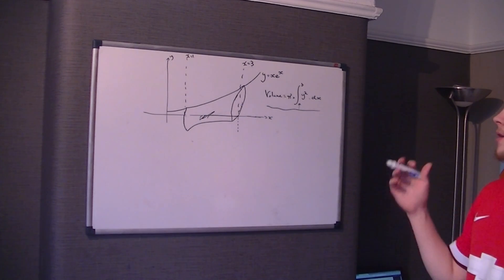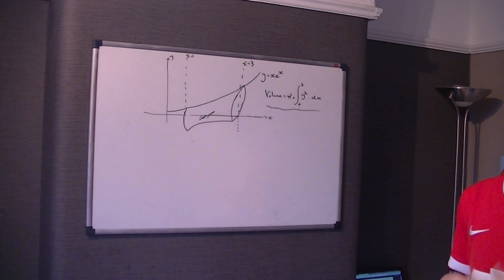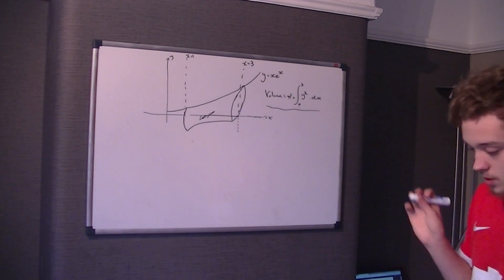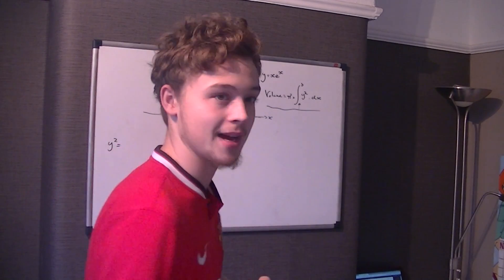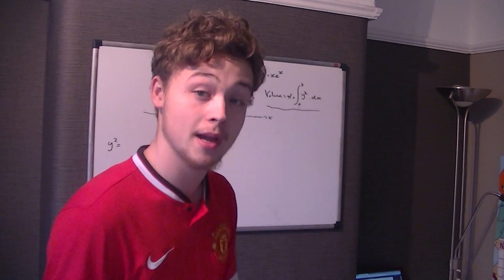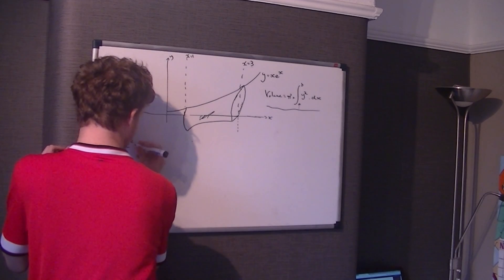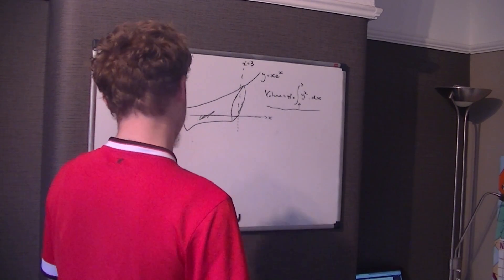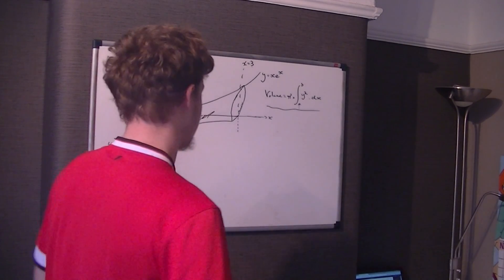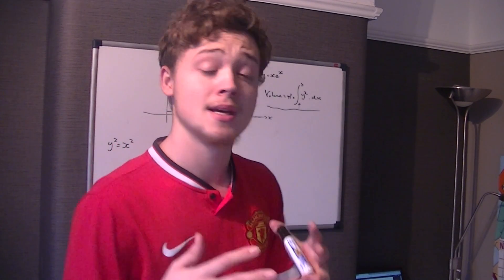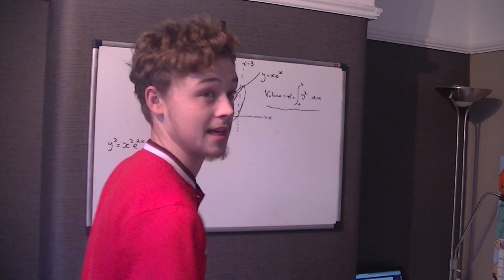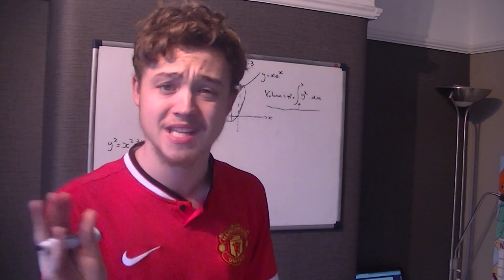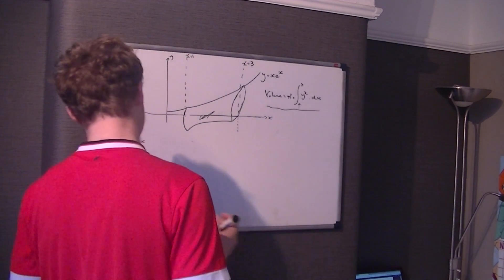Okay, so we're given the equation of the graph is y equals x times e to the power x, which is obviously a product. We've got the volume formula for rotating it around the x-axis, and that's pi times the integral of y squared with the limits a and b with respect to x. So the first thing we need to do is find out what y squared is. If y is xe^x, then y squared is x squared e to the 2x.